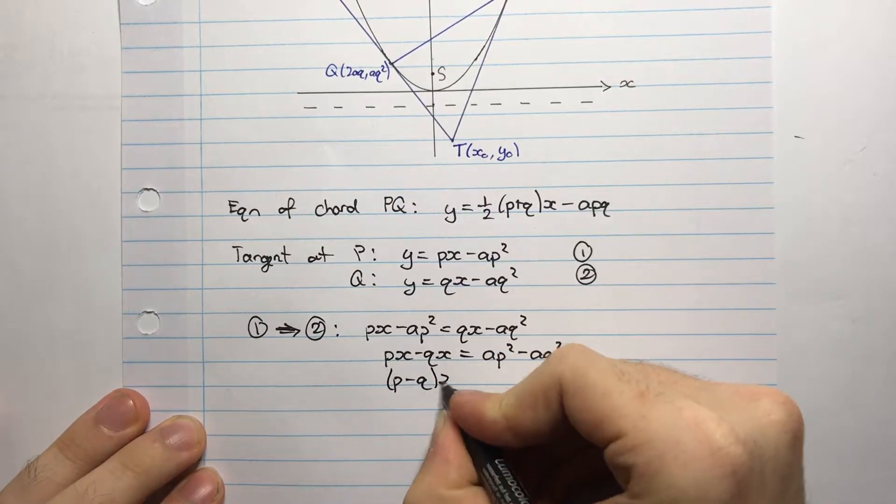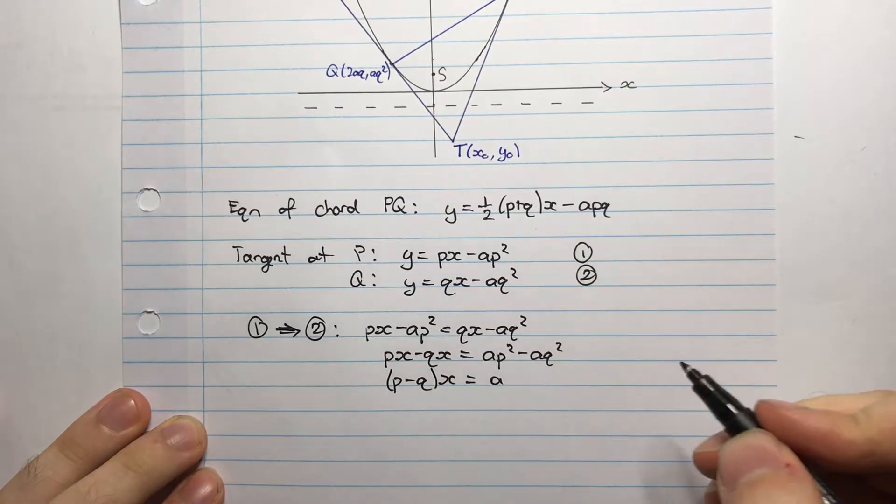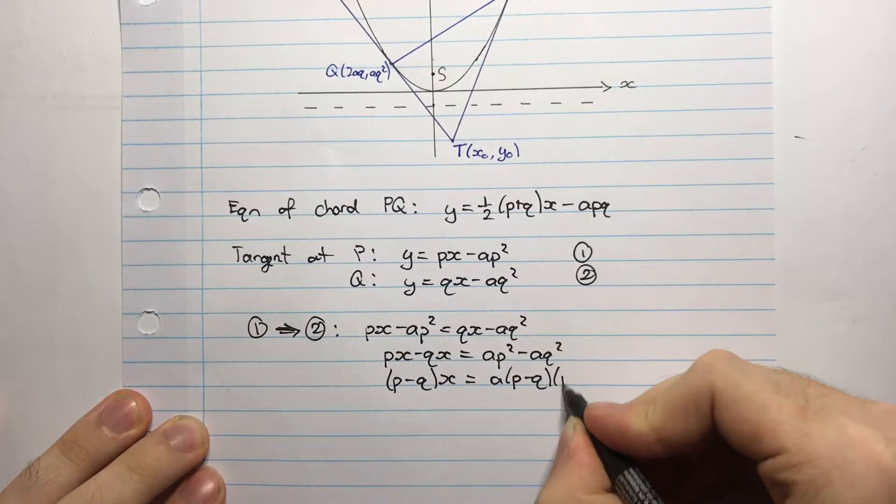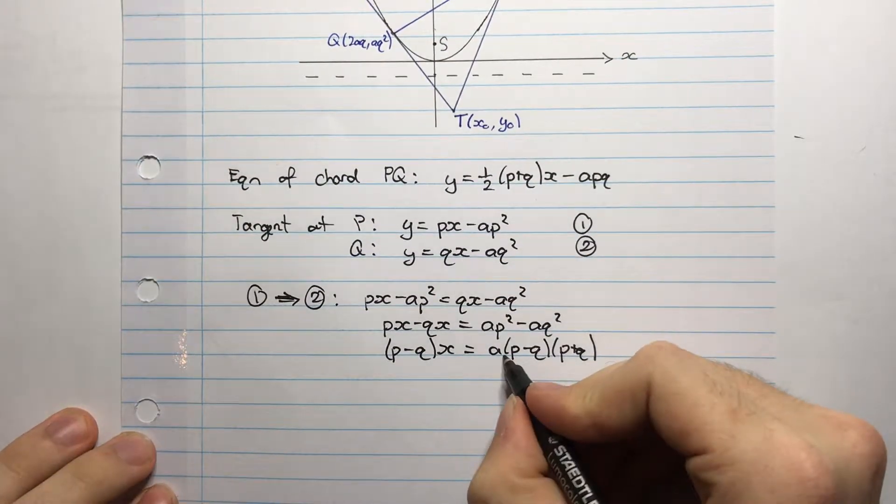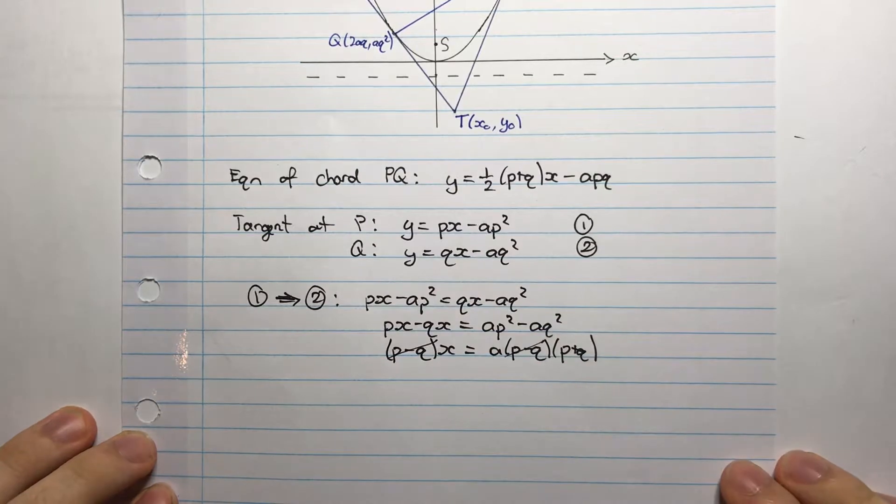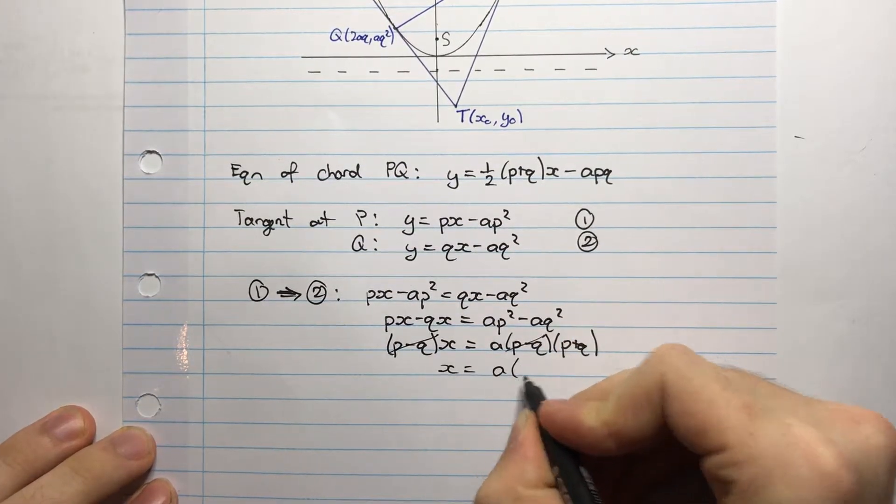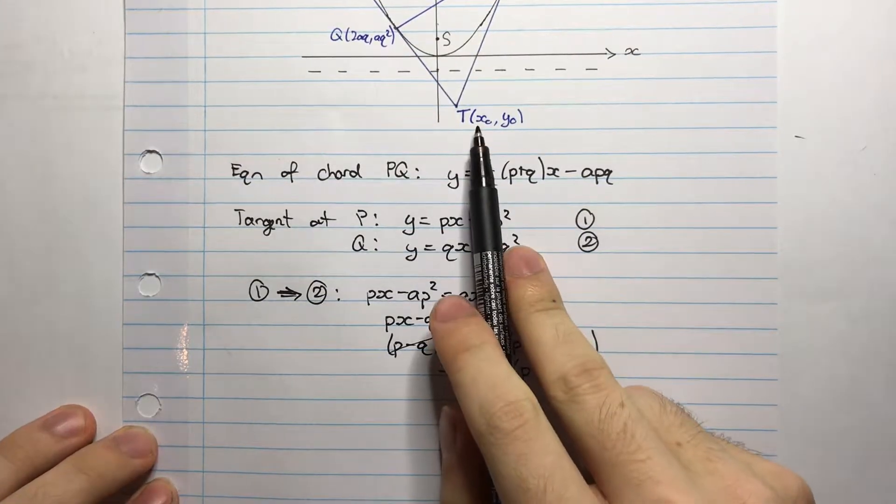Now I'll factorize both sides. I'll have P minus QX equals A, and then I'll have P squared minus Q squared, which I can factorize as P minus Q multiplied by P plus Q. Okay, I can cancel these two terms here. And so therefore x is equal to A into P plus Q. So that's the x coordinate of the point T.